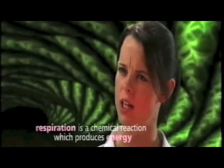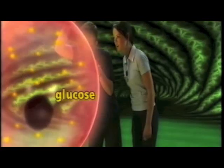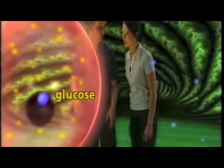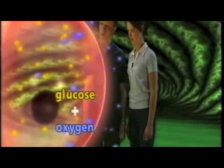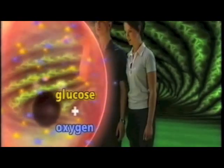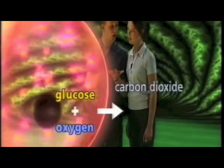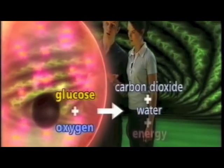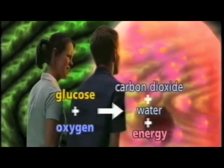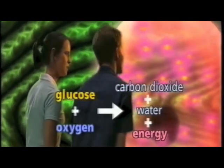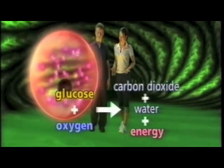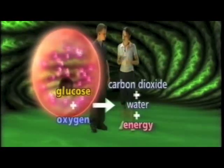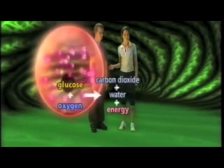So how does that work then? Do you remember our animal cell? It contains glucose, which is a very simple sugar. And we all know that when we breathe in air, oxygen gets into our cells. The oxygen and the glucose react together to produce carbon dioxide, water and energy.